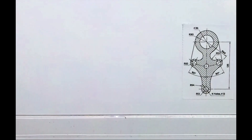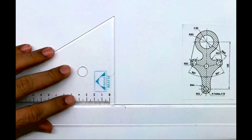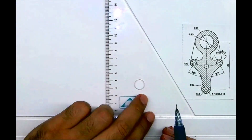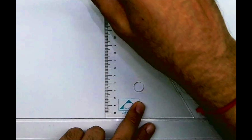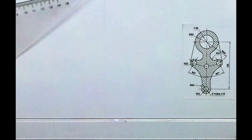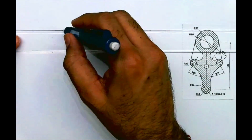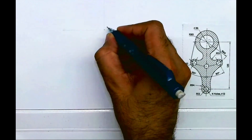Welcome to technical drawing. Today we will see this sum — we have to copy this sum directly. First we will draw axis lines. We will draw a vertical line and a horizontal line, and wherever they intersect, that is point O.